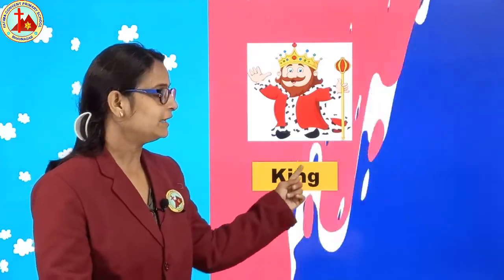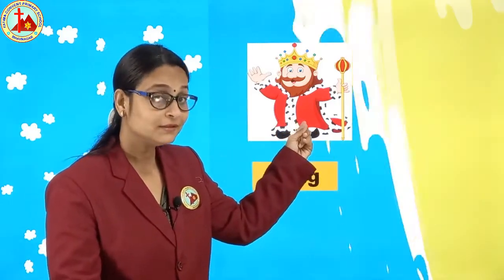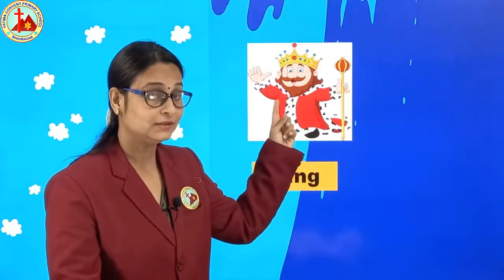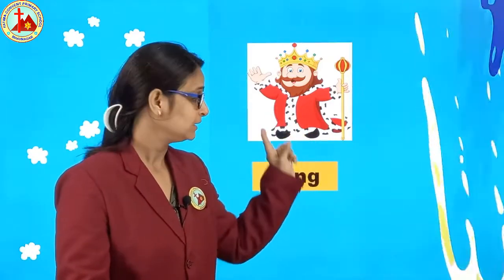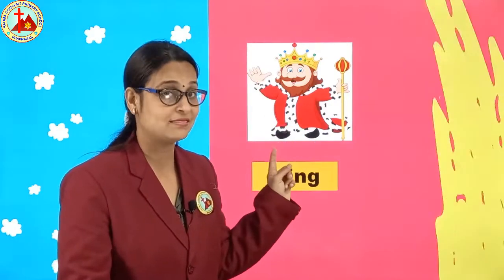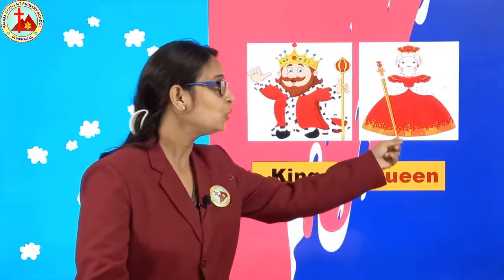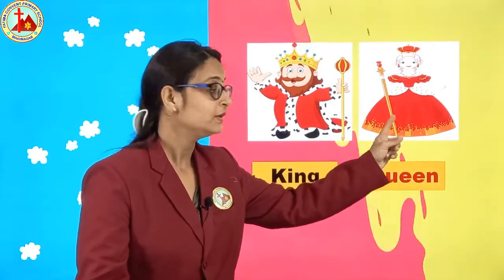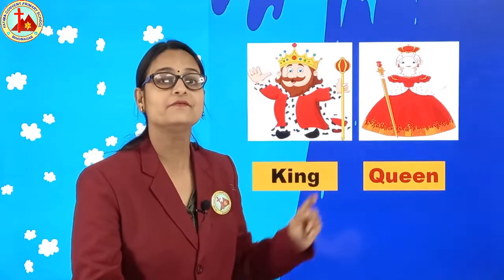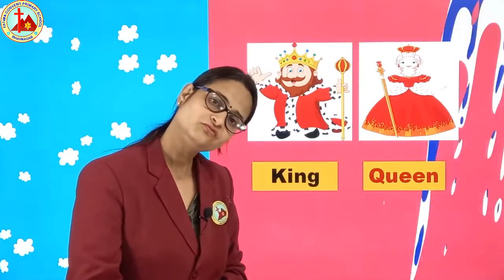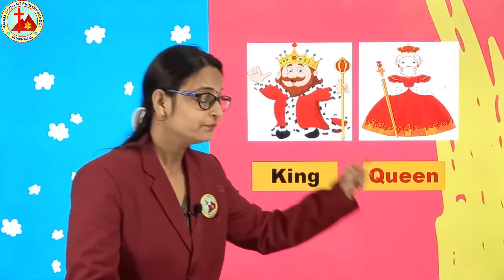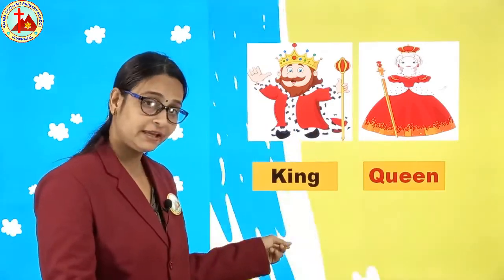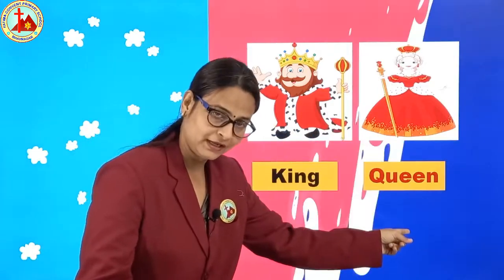See one more example. K-I-N-G. King. This is the picture of a king. King is masculine gender. Queen. Queen is feminine gender. King, queen.